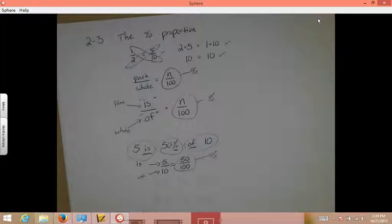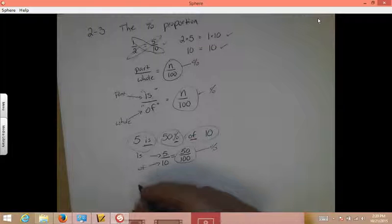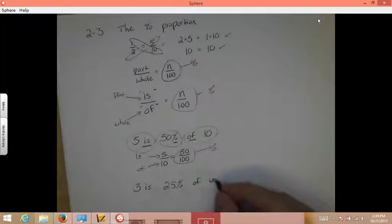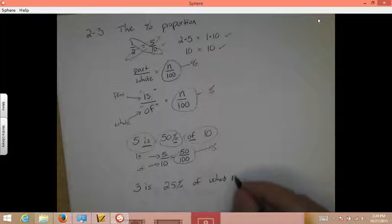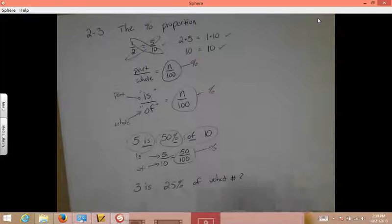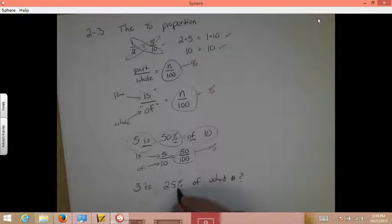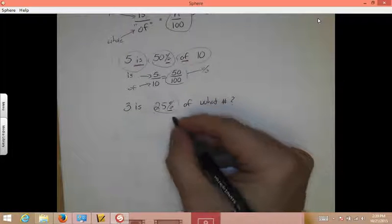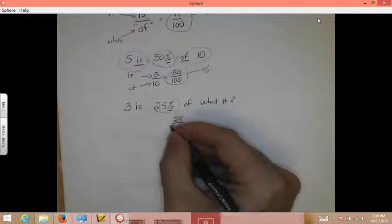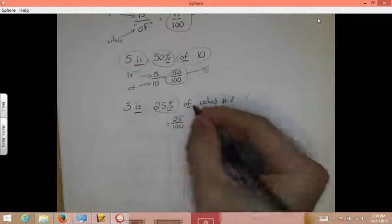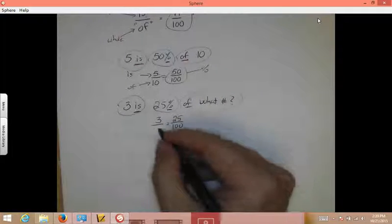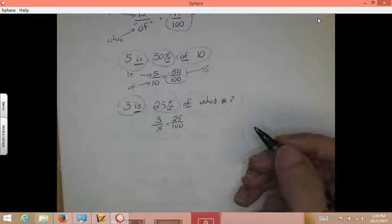Now let's see what happens with a problem. Let's say we have three is twenty five percent of what number. Look at that. It didn't tell you what the number is. So let's look at what we do have. Always look for the percent first. There's my percent. So we're going to write twenty five over one hundred. My is and my of. Well, I know the is is three. Is goes on top. The of I don't know. So I'm going to put an X there because I don't know.